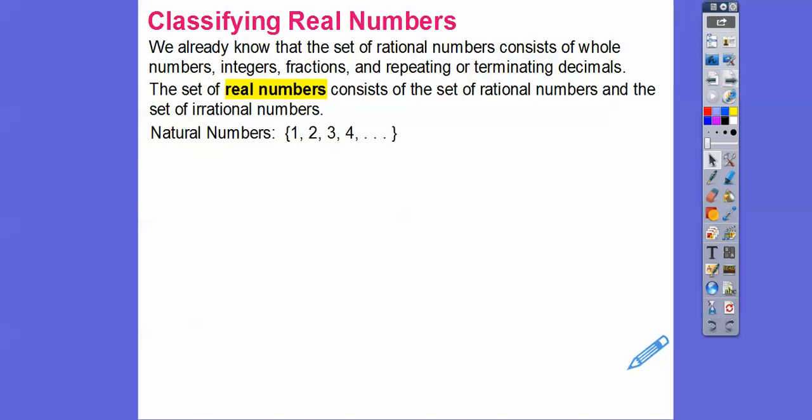So natural numbers — the numbers they started with thousands of years ago — were natural numbers: one, two, three, four. They had one cow, two cows, three cows. And then zero came into the picture, so those are called whole numbers. They're natural numbers including zero.